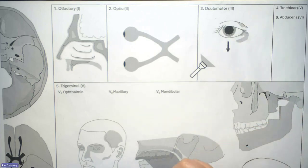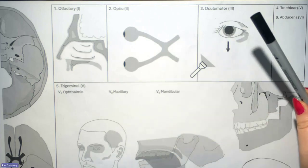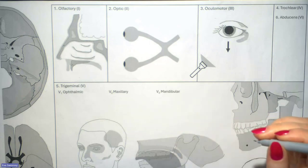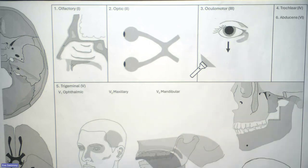In this session, we're going to do a quick overview of the cranial nerves. You should have your sheet printed out in A3 and have some markers nearby.